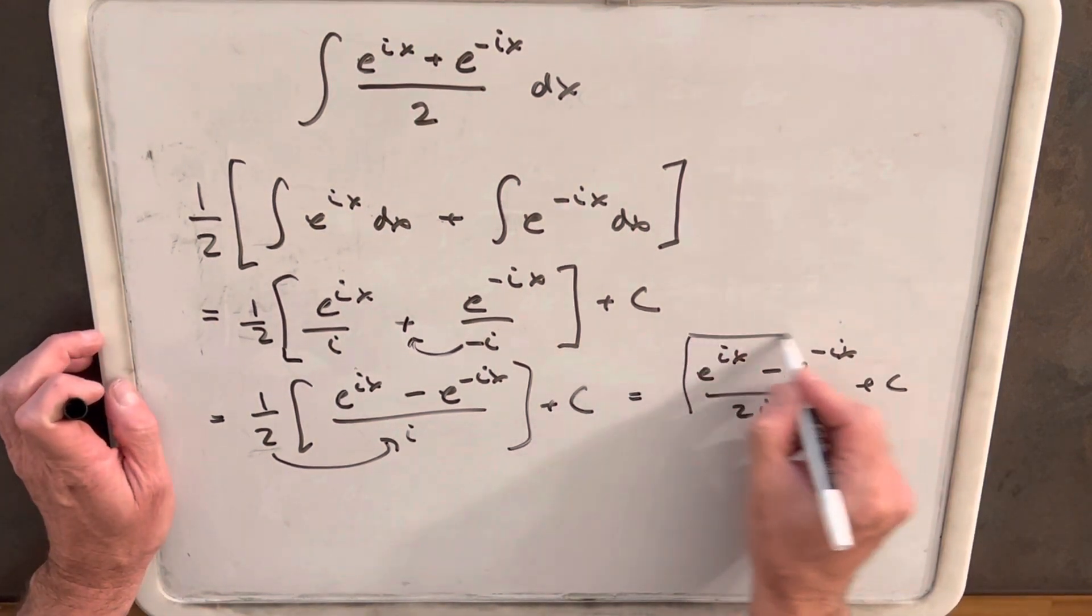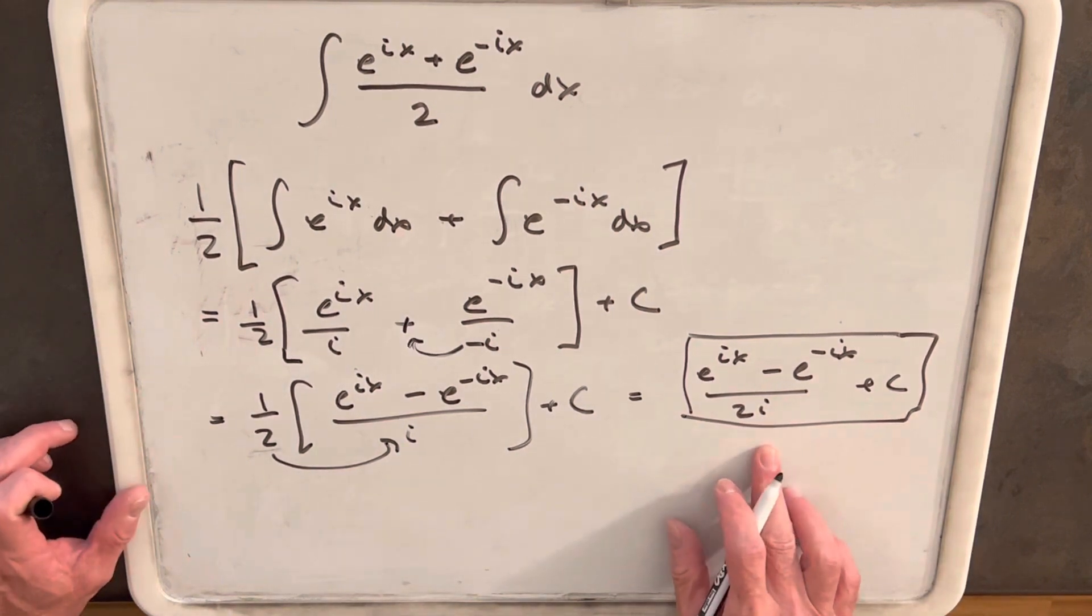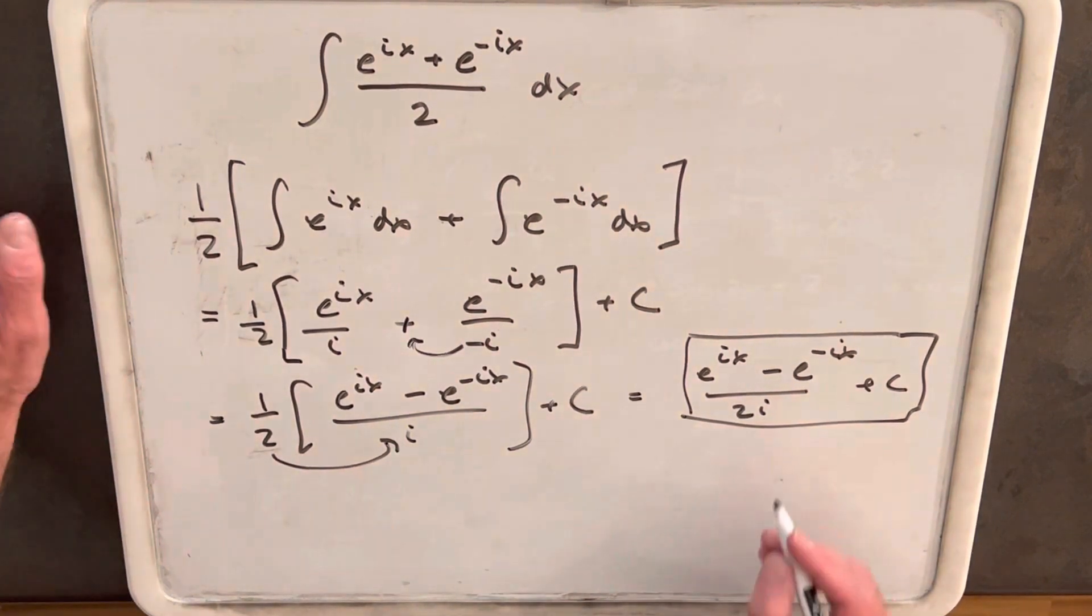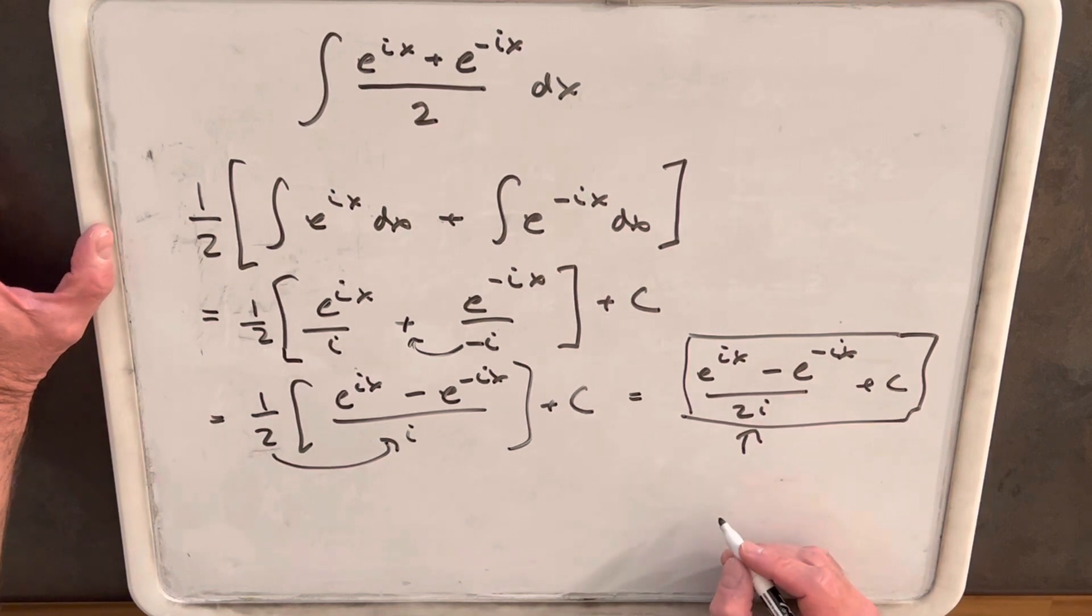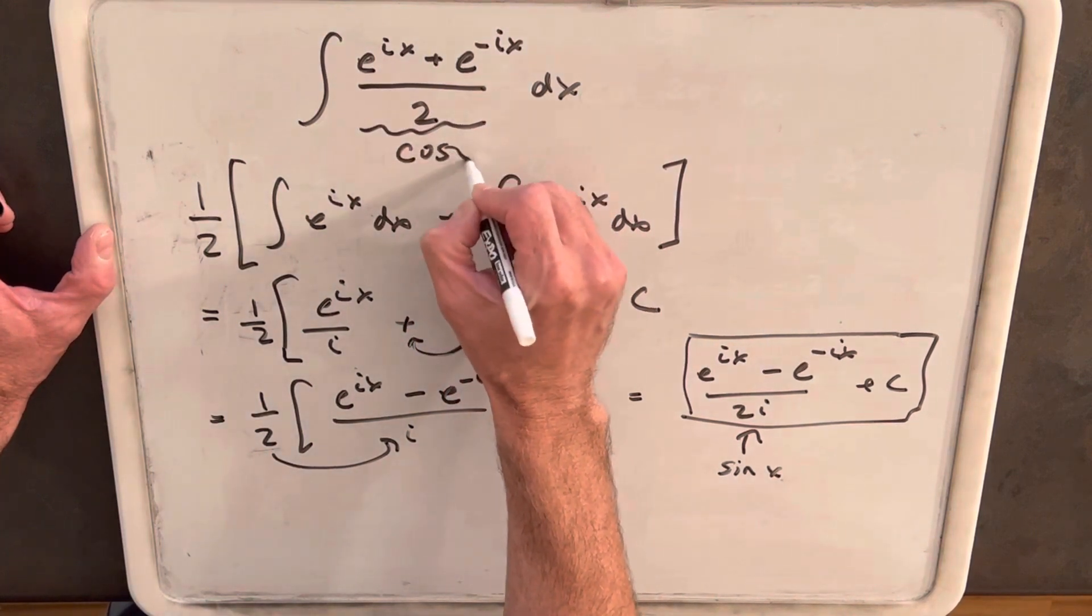And that's our answer, but I think this is the point where we need to identify what we're looking at here. So it turns out that this thing is actually going to be sine of x, and this thing right here is cosine of x.